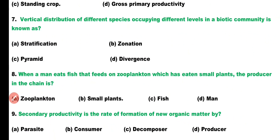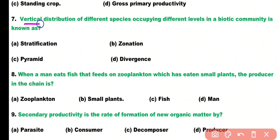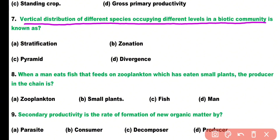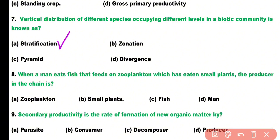Question number seven. Vertical distribution of different species occupying different levels in a biotic community is known as: stratification, zonation, pyramid, or divergence? Correct answer is option A. Vertical distribution of different species in a community occupying different trophic levels is known as stratification.